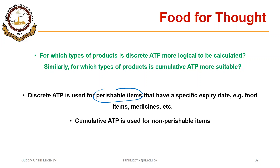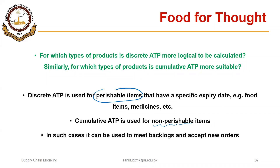And cumulative ATP is used for non-perishable items like hardware items such as motors, fans, pumps, and products like those. In such cases it can be used to make backlogs and accept new orders. So for example, the ATP based on a previous MPS can be used to meet the demand for the next MPS and vice versa. Thank you very much.